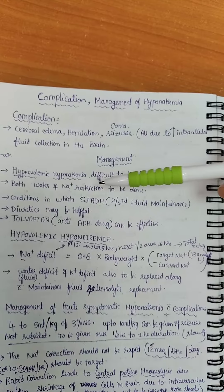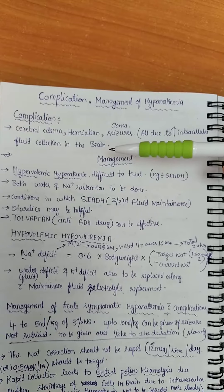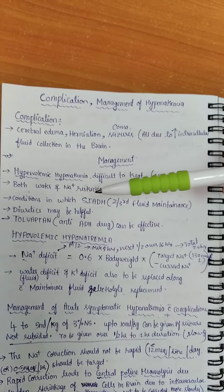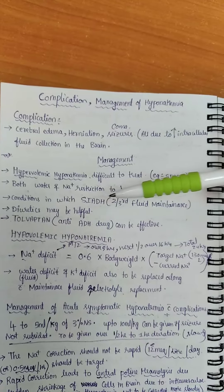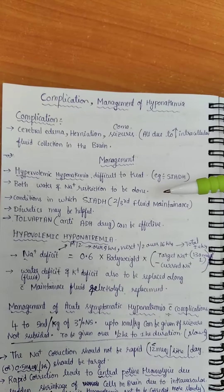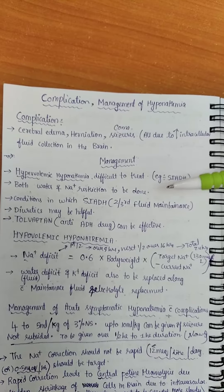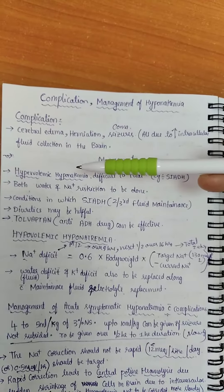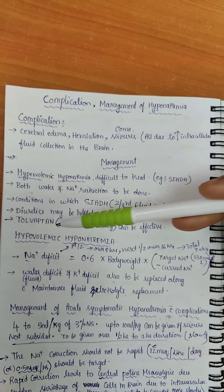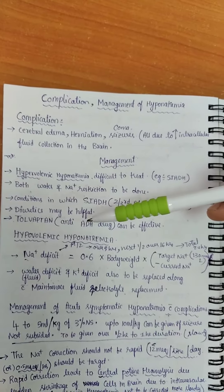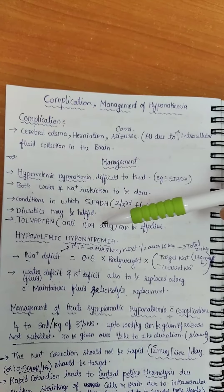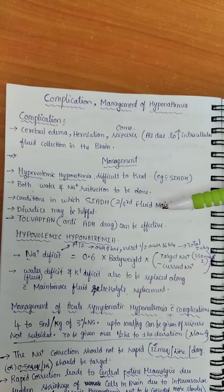Sodium should be restricted even though there is hyponatremia. In conditions with SIADH, two-thirds maintenance fluid should be given. Diuretics may be helpful in such type of hyponatremia. Tolvaptan, a new drug which opposes the action of antidiuretic hormone, can be effective.